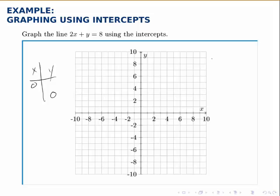When x is 0 in this equation we have 2 times 0 plus y equals 8. This first term disappears since it's 2 times 0 and all we have is y equals 8. So when x is 0, y is 8.